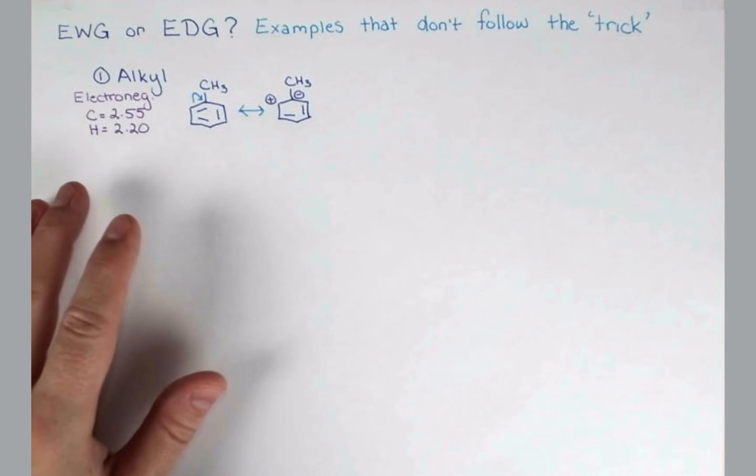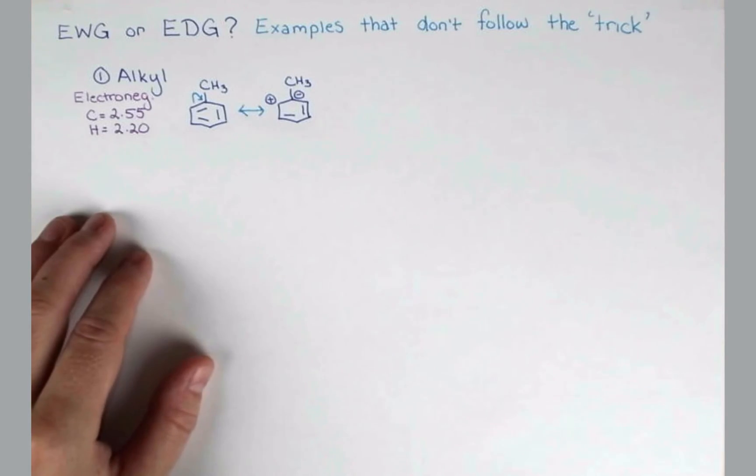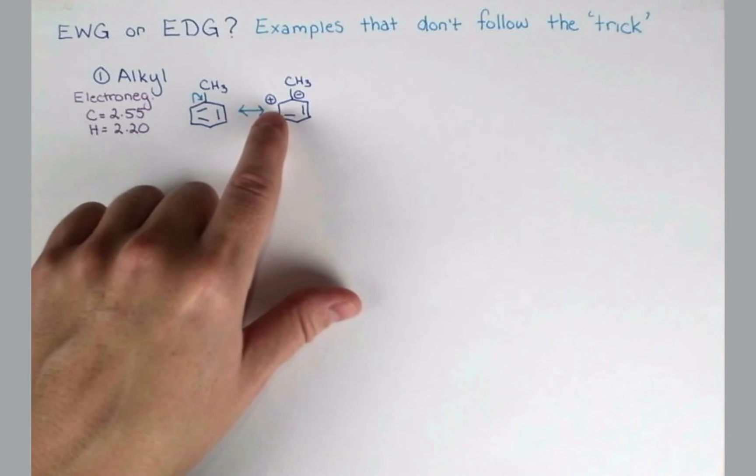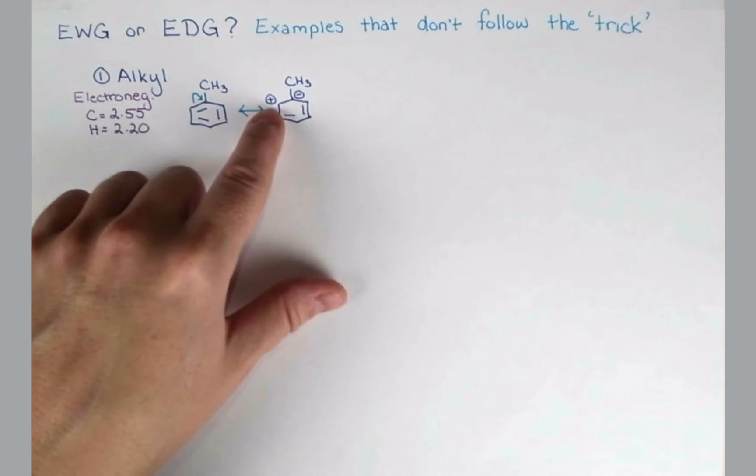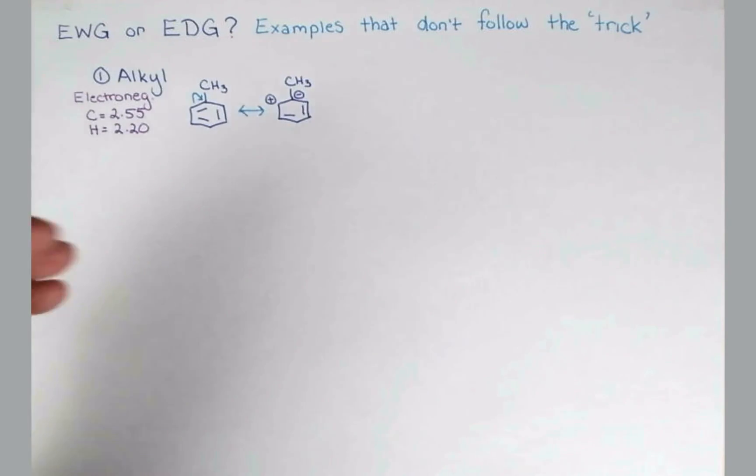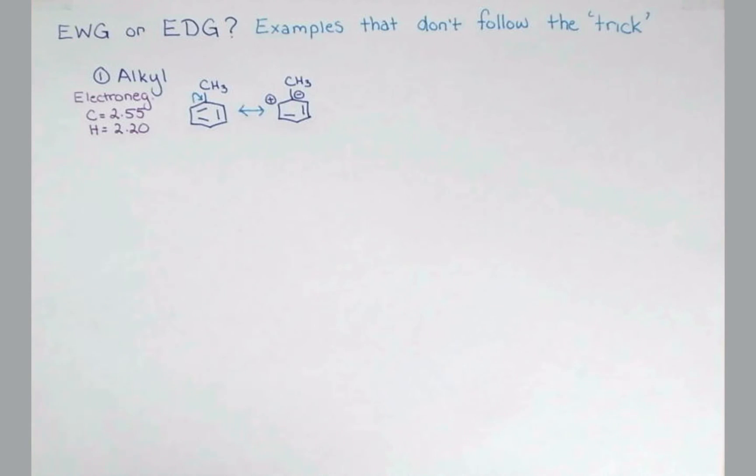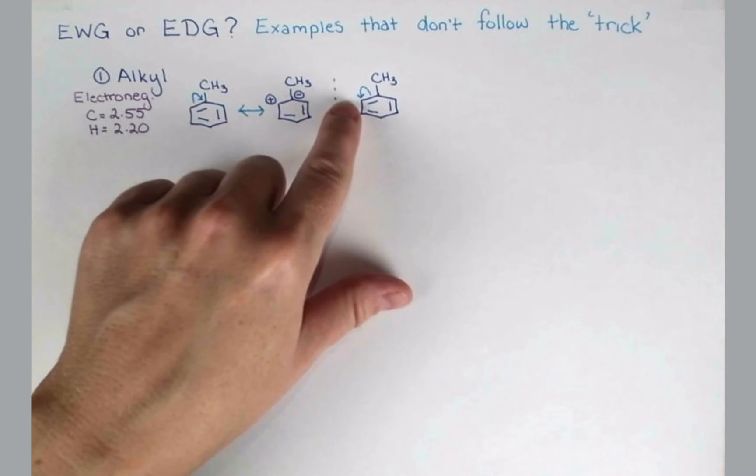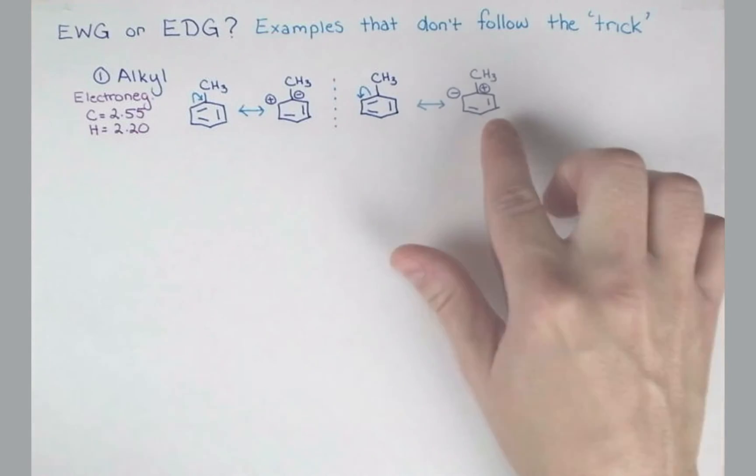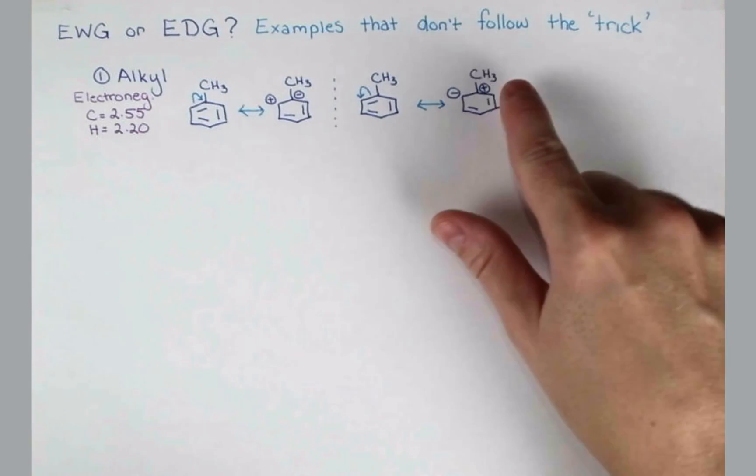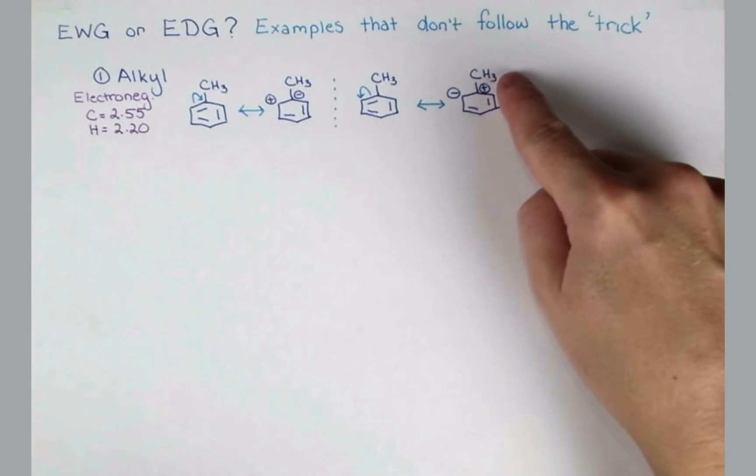Well, carbocations are more stable when they're more substituted. And so this carbocation here is just secondary, it's bonded to two groups. Let's look at what would happen if we pushed electrons in the other direction. The electrons are moving onto this carbon atom in this resonance form. Now when we push our electrons this way, we get a tertiary carbocation.